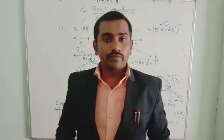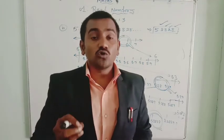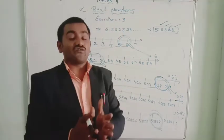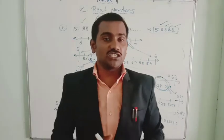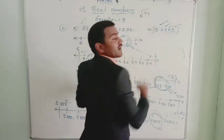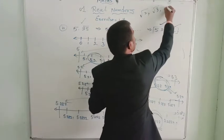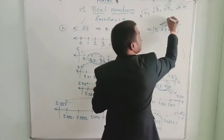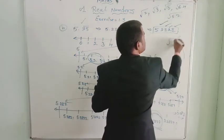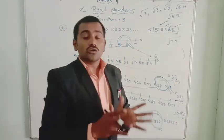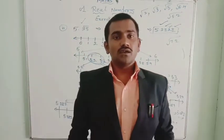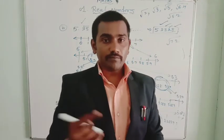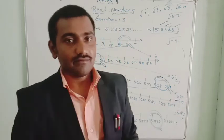In my next video I will explain how to represent irrational numbers on the number line — numbers that are not perfect square numbers, like root 2, root 3, root 5, root 6.4, root 5.2, root 7.2. Till that time, keep practicing. Bye-bye.